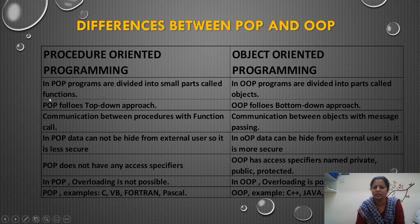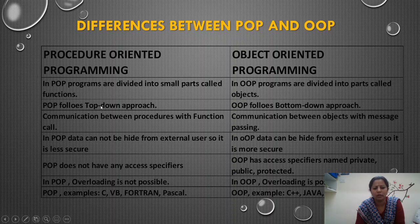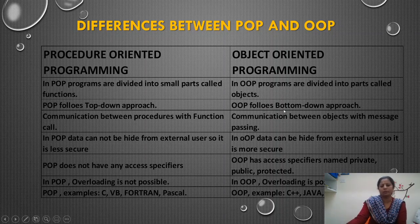In procedure oriented programming, we studied functions in first year; now we have objects. Object contains both data and functions, hence data is more important here. Procedure oriented programming follows a top-down approach. Object oriented programming follows a bottom-up approach. Communication between procedures is with a function call — we are invoking functions with a function call. In object oriented, communication between objects is using message passing.